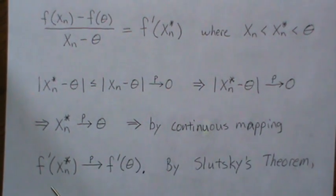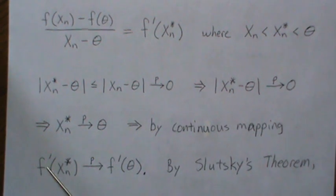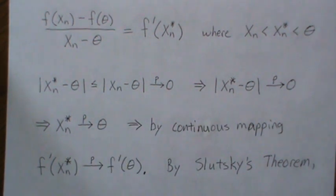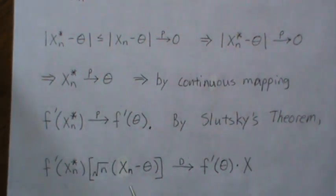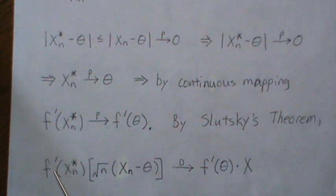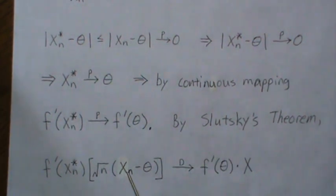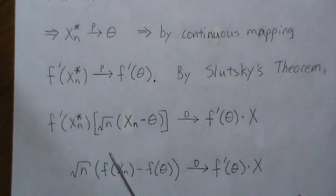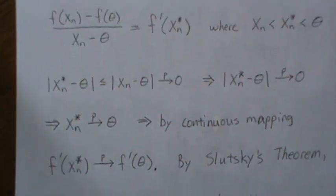Now by the continuous mapping theorem — and one of our assumptions that the first derivative exists everywhere and is therefore continuous — since X*_n converges in probability to theta, this continuous function g' applied to X*_n converges in probability to g'(theta). Then by Slutsky's theorem, since this piece converges in probability and this piece converges in distribution, their product converges in distribution to the corresponding product.